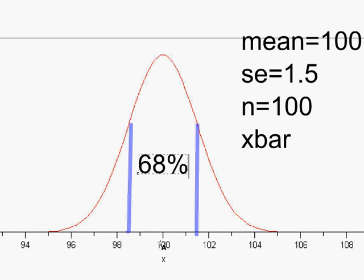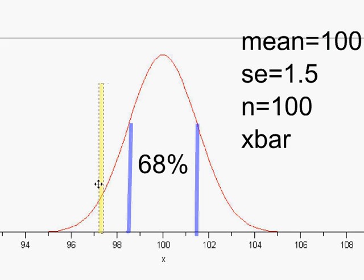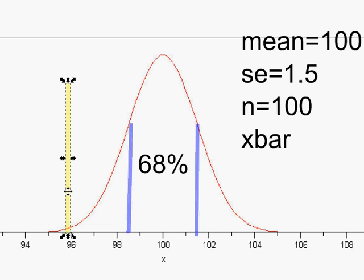Suppose the population mean is 100 but our sample mean was 99. You don't expect your sample mean to be exactly equal to the population mean. But as the sample mean gets further and further away from what the null hypothesis says, you have to ask: how far does it have to get from 100 before we really start to doubt that the population mean really is 100?